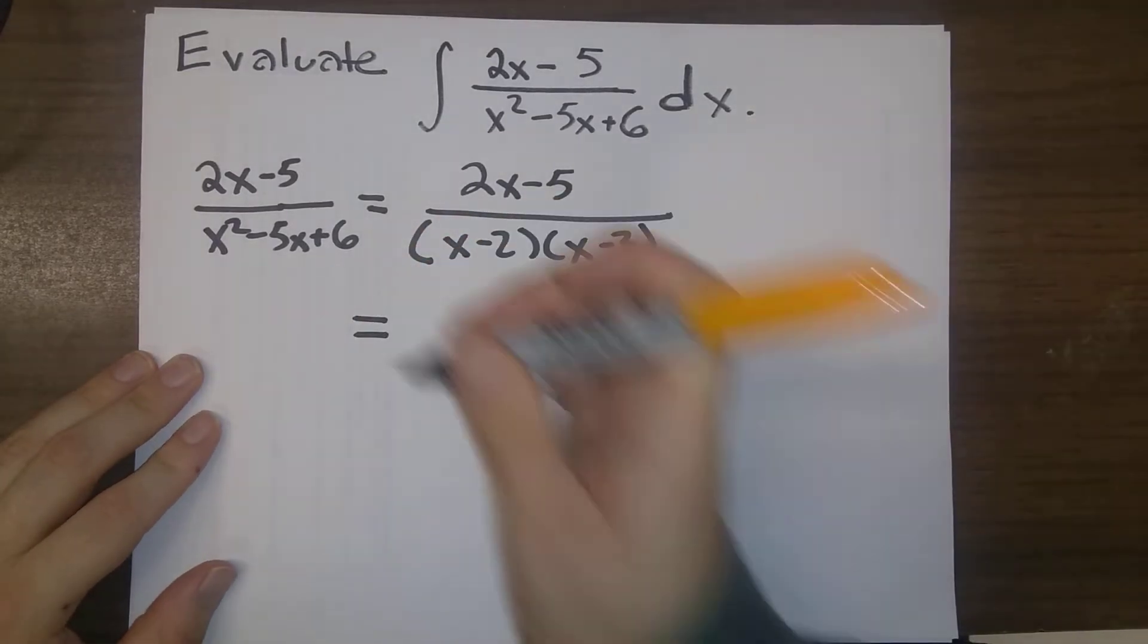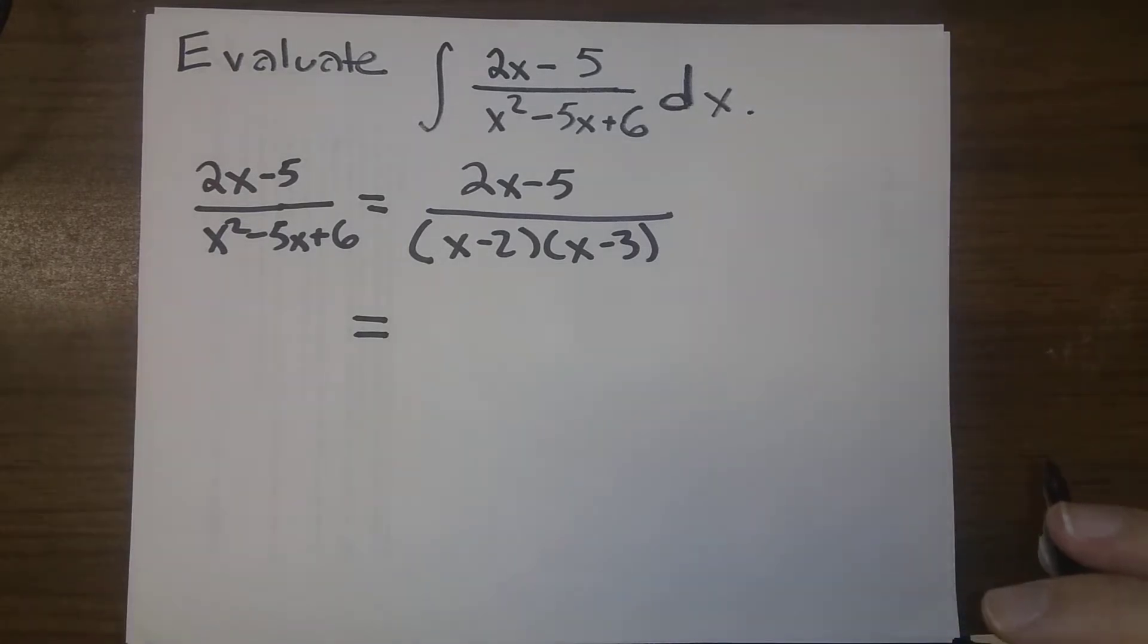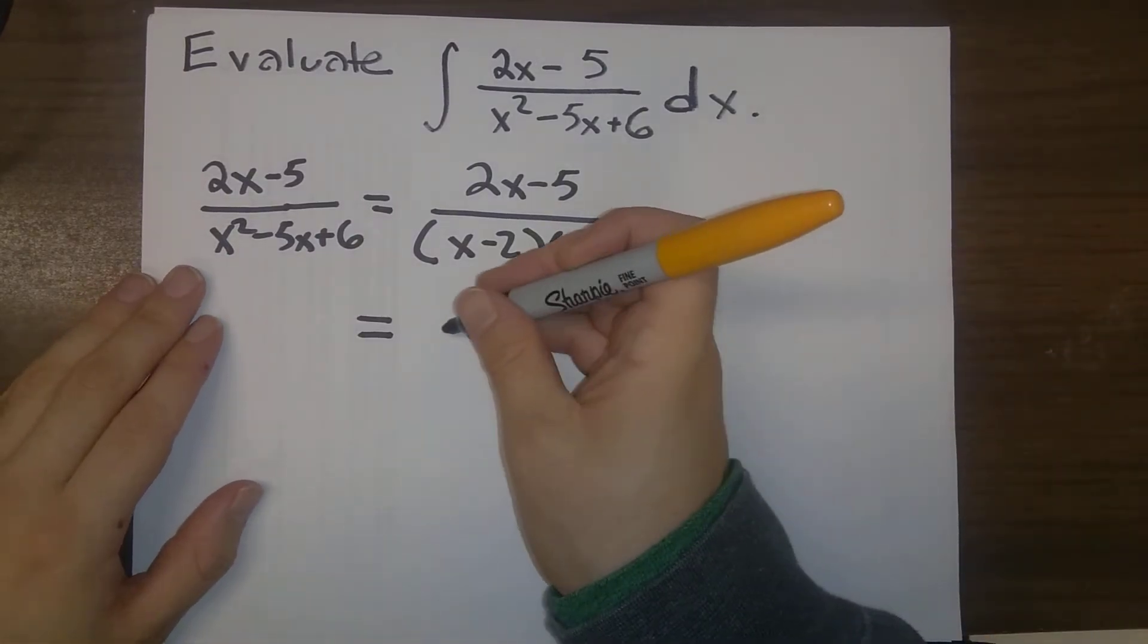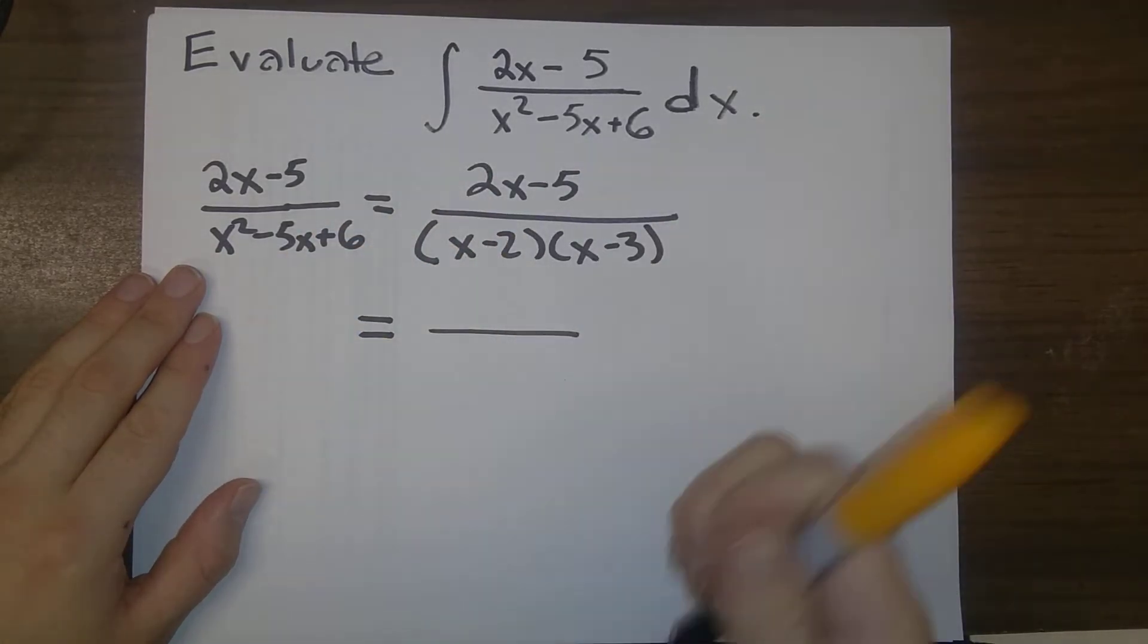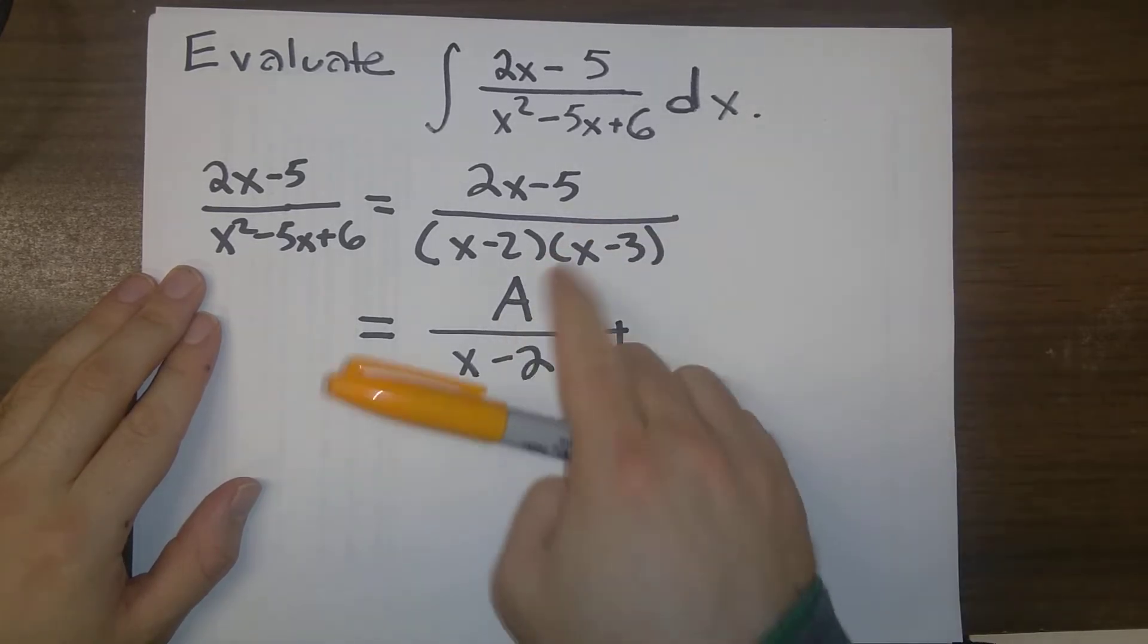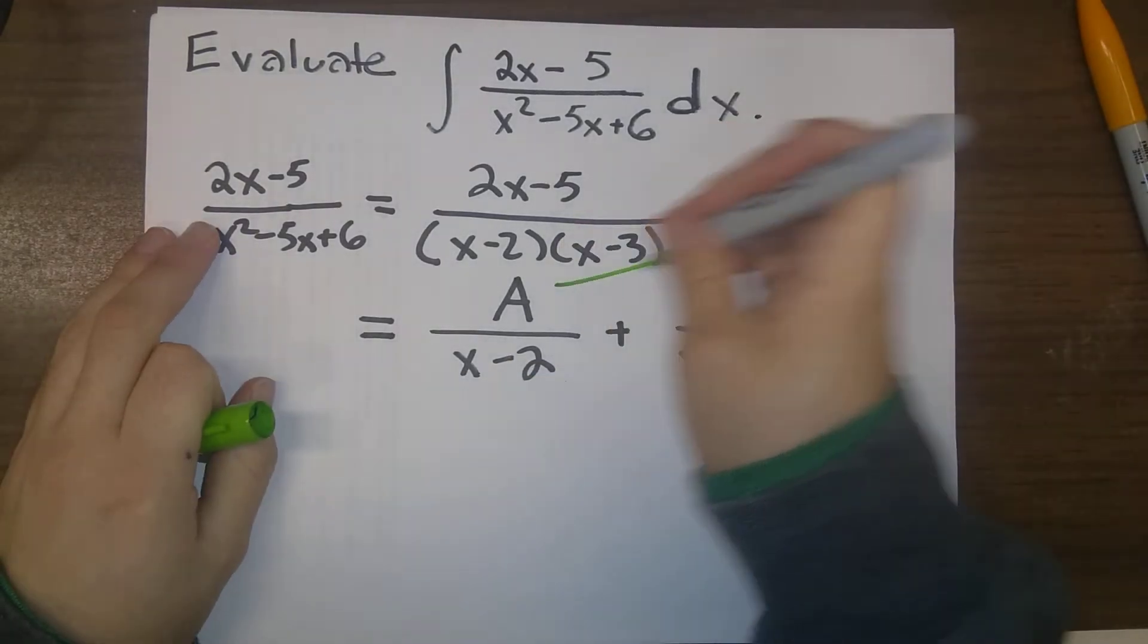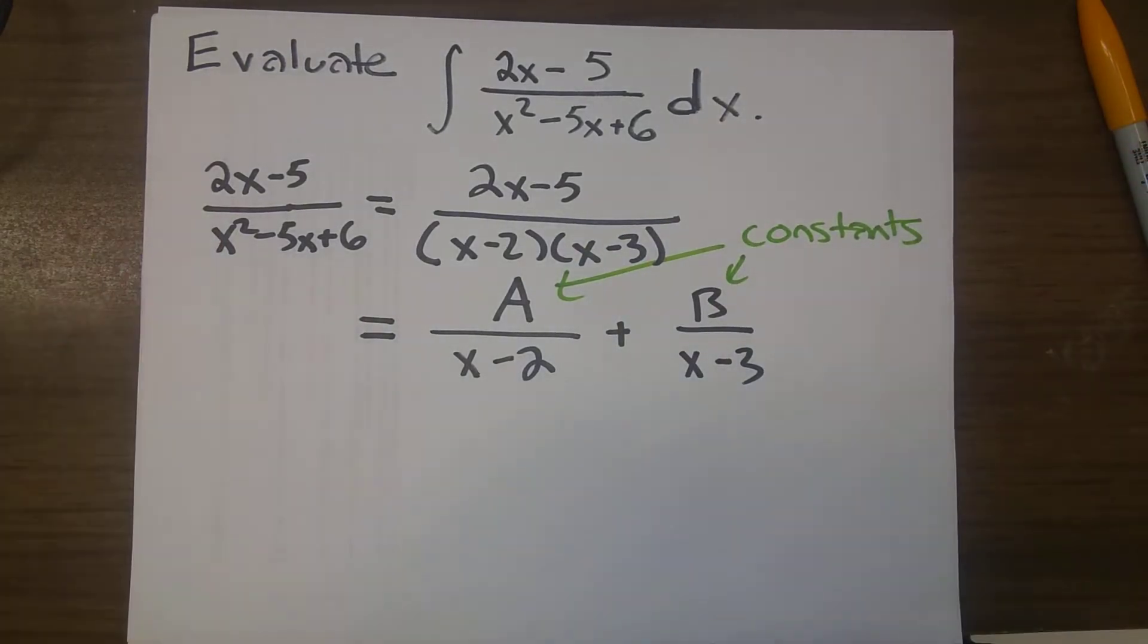Now, we're going to go for our partial fractions decomposition. Assuming that we're meeting these criteria, we are guaranteed that the following process is going to work. We can write this fraction as something divided by x minus 2 plus something divided by x minus 3 where the A and the B here are both constants.